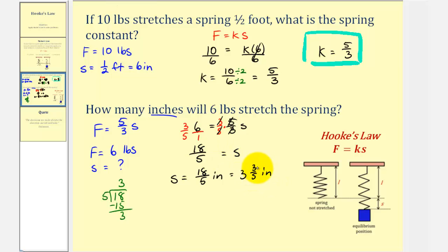And since three-fifths is equal to six-tenths, we could also express s as a decimal. We could also say s is equal to three and six-tenths, or three point six inches.